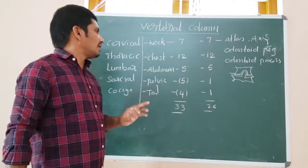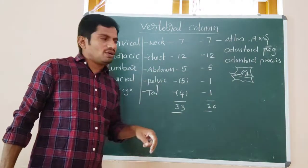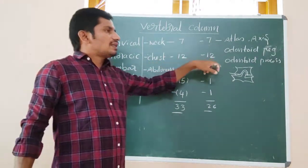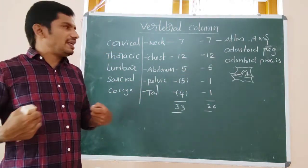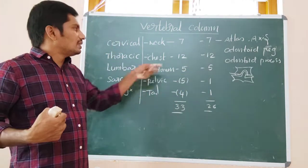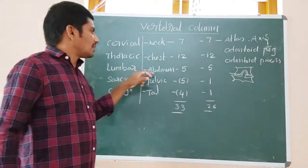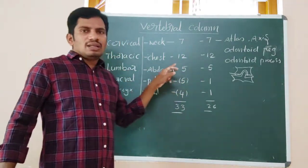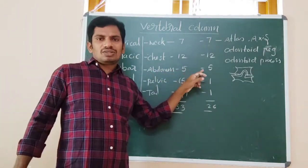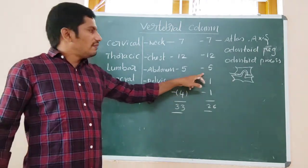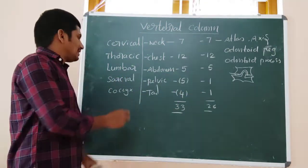The cervical vertebrae are small in size. The thoracic vertebrae are in the chest region and give connection to the ribs, which are called thoracic ribs. The lumbar vertebrae are five in number and are the largest and strongest vertebrae. In women, the lumbar and sacral regions are particularly important.